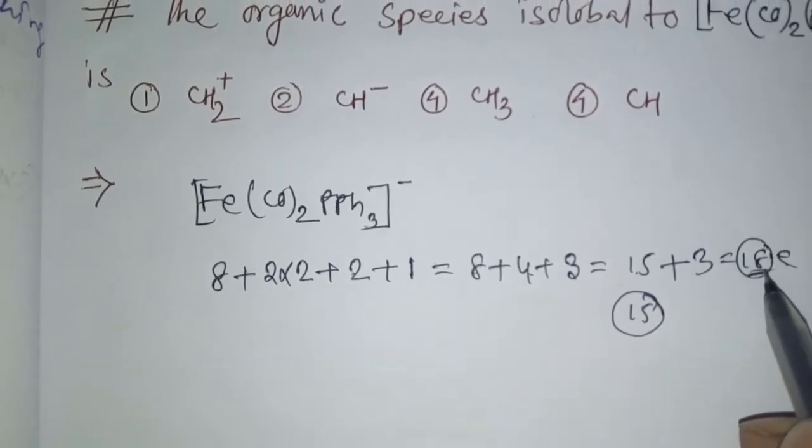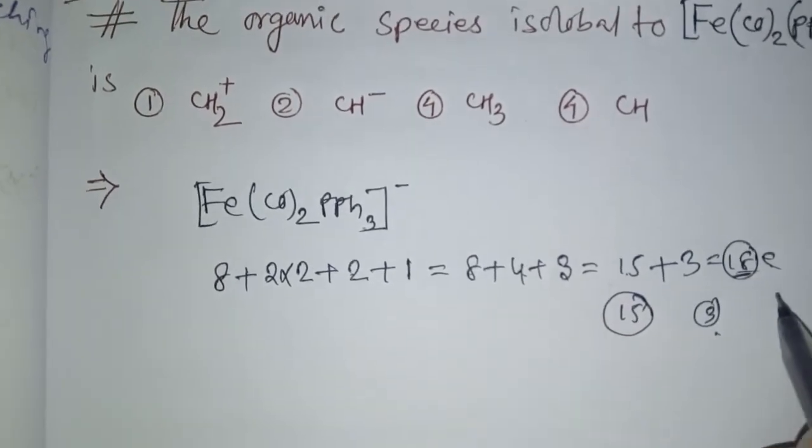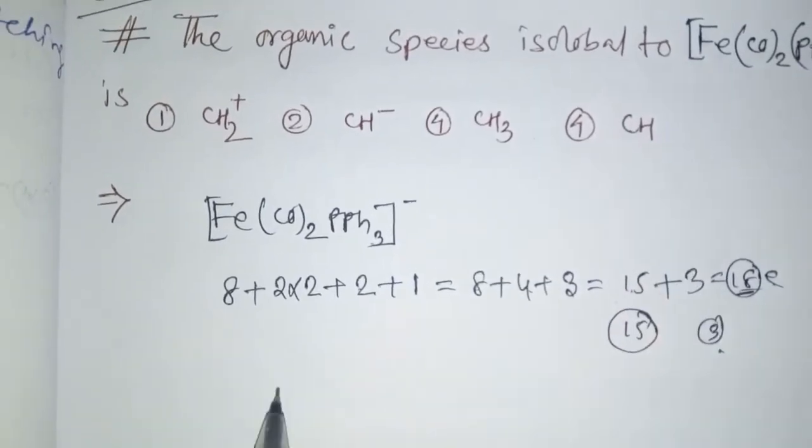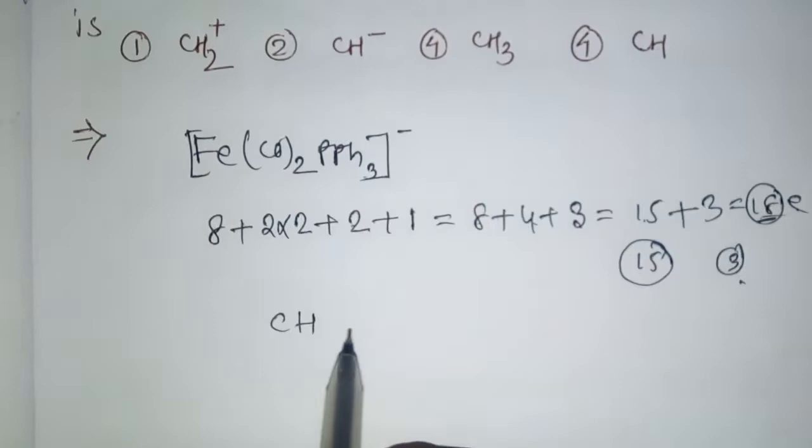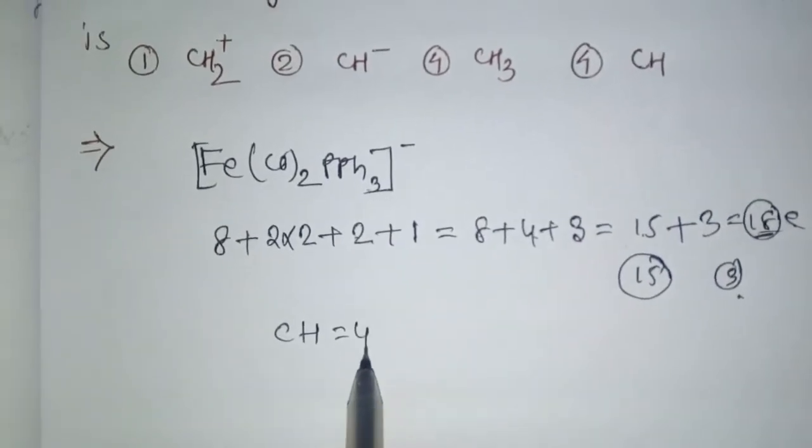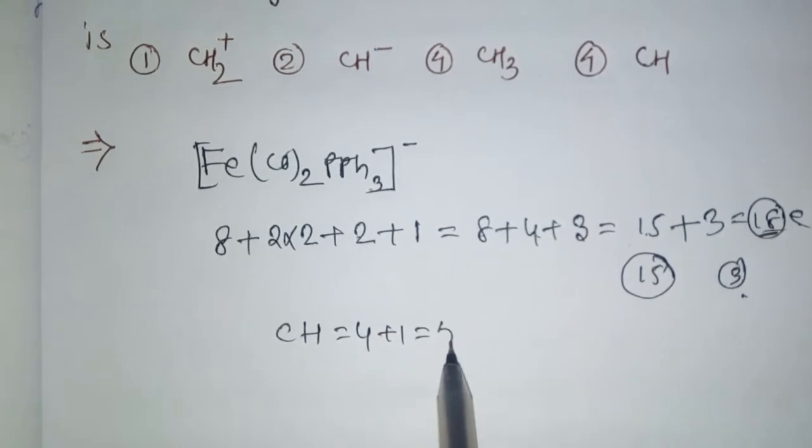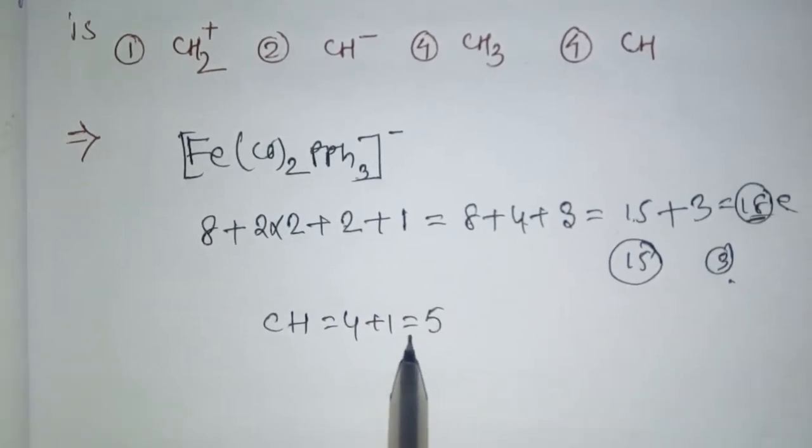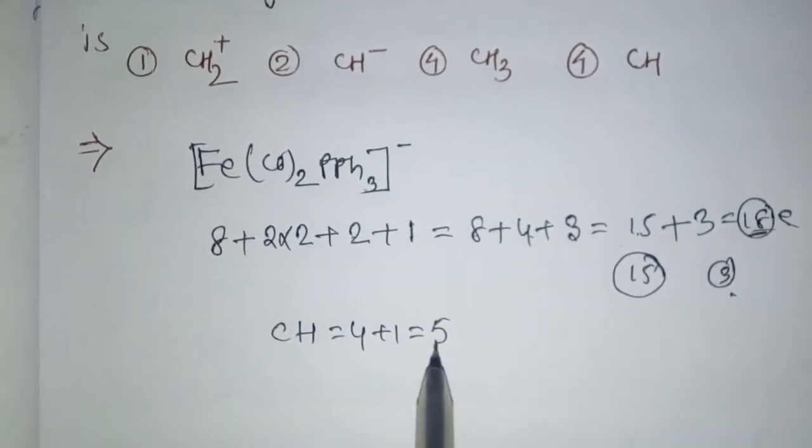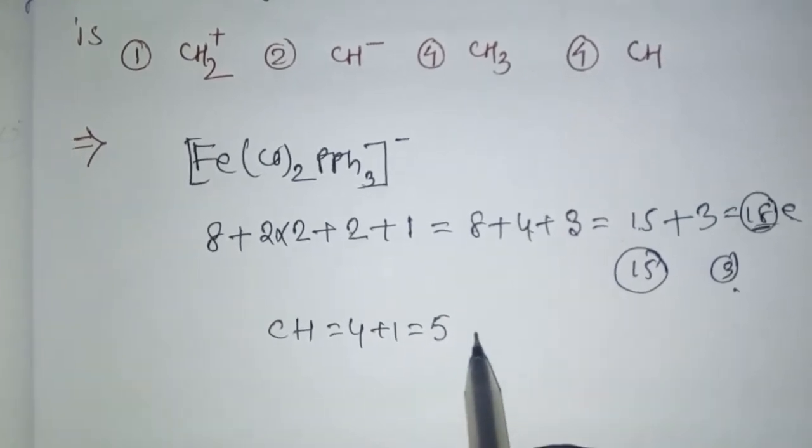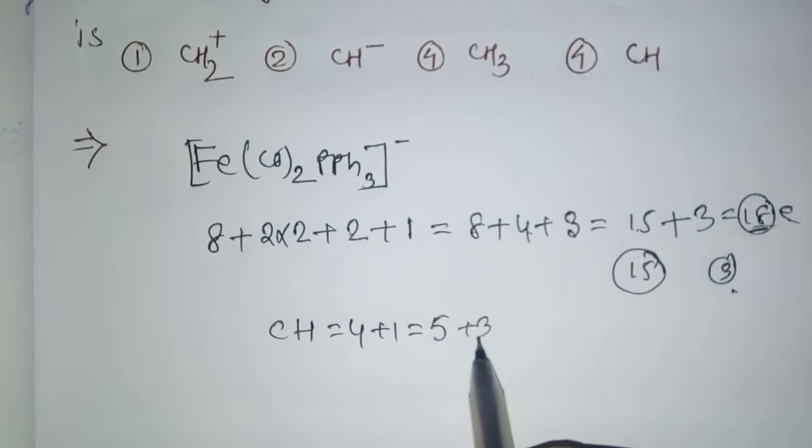Now we have to see which main group compound matches. Let's check carbon. For CH, carbon has 4 valence electrons plus 1 from hydrogen equals 5 total valence electrons.